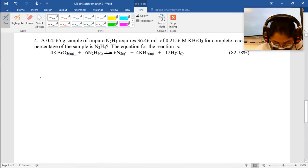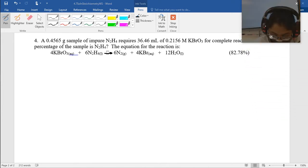So you have a 0.4565 gram sample of impure N2H4, and it requires 36.46 milliliters of 0.2156 molar potassium bromide for complete reaction. What percentage of the sample is N2H4? The equation for the reaction is right here.